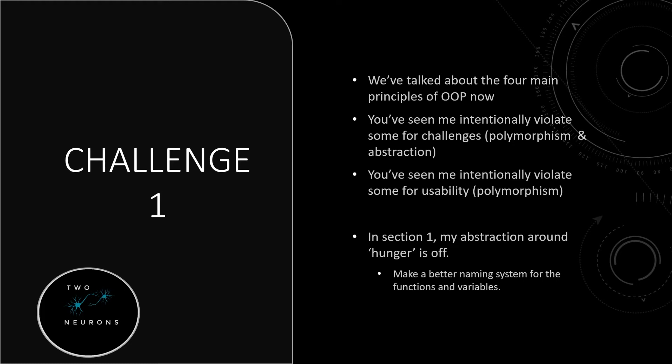Let's think about abstraction. In section one of this series we created a hunger statistic. This hunger statistic works in sort of the inverse of the wording itself, which can be seen as bad abstraction. So your first challenge is to think of a better naming system and implement it for the related functions and variables.